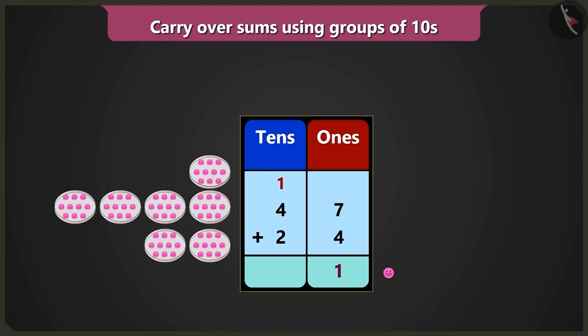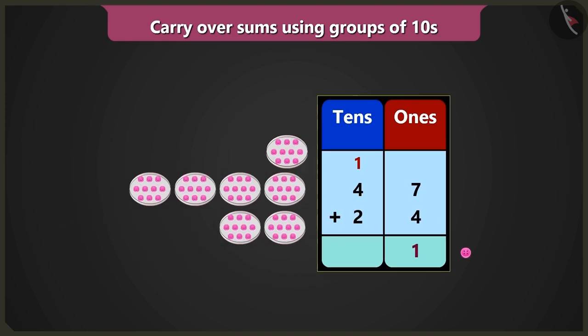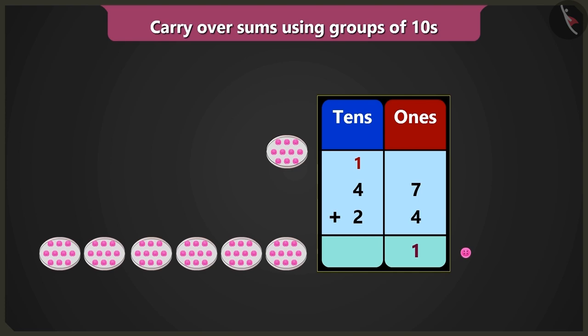Now in the box of tens, four tens added to two tens will give us six tens. Now six tens added to the carry over one ten will be a total of seven tens.